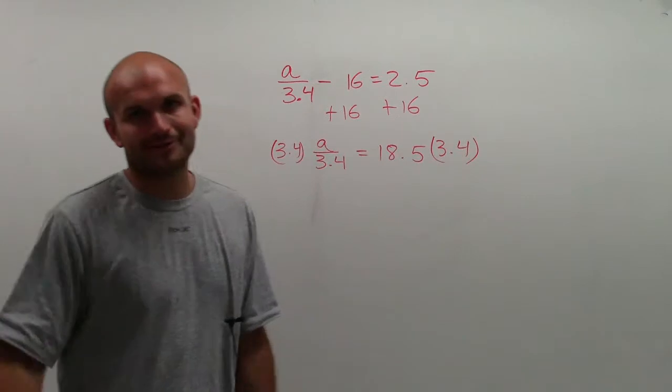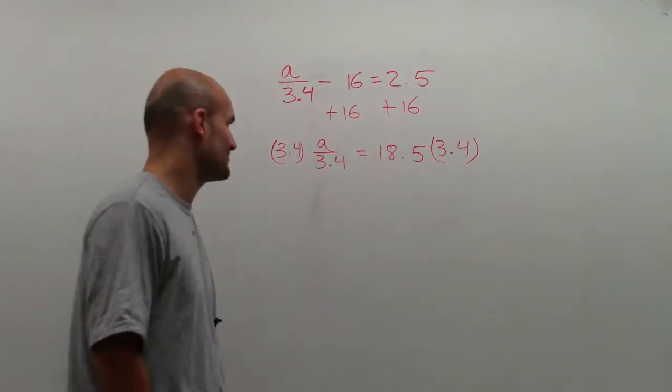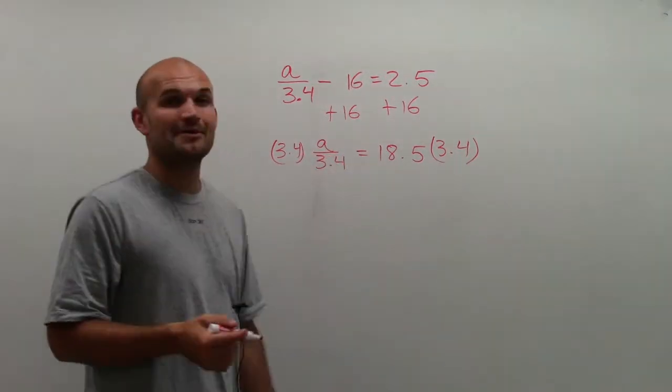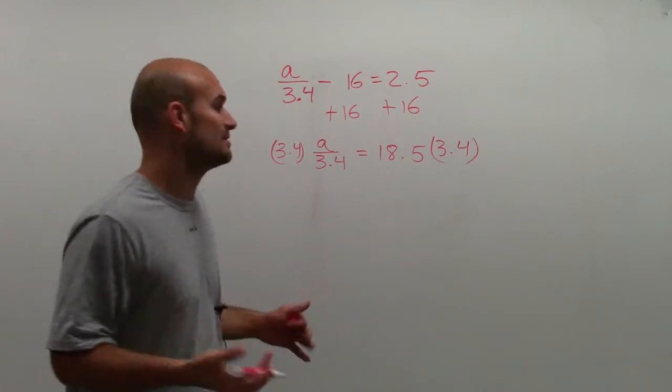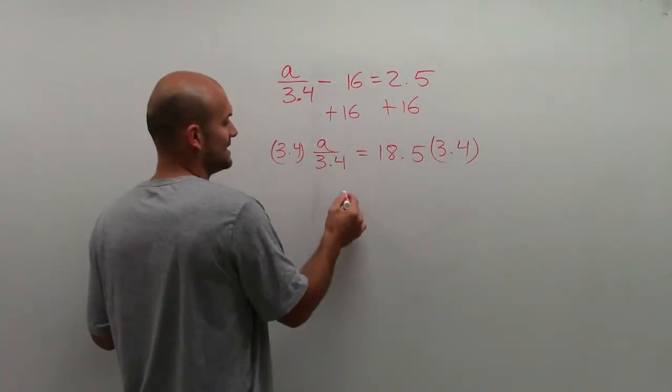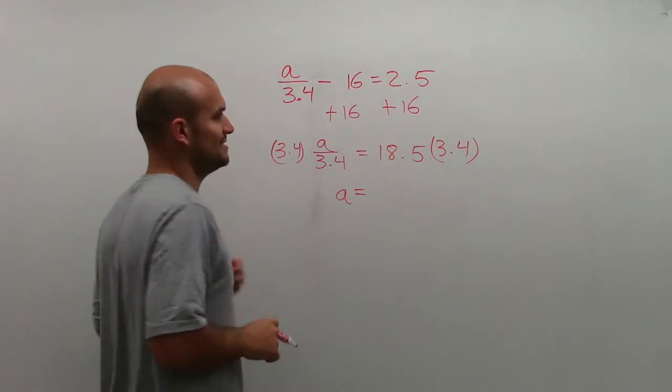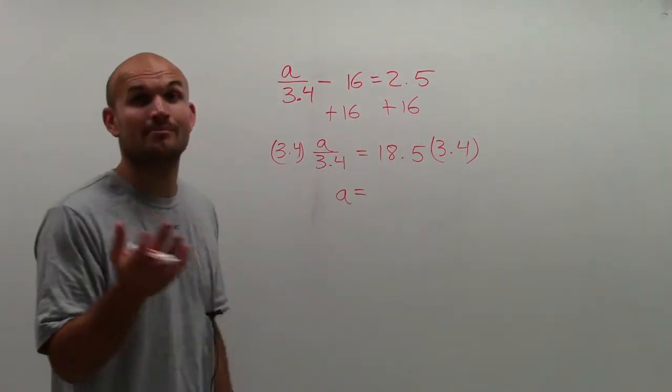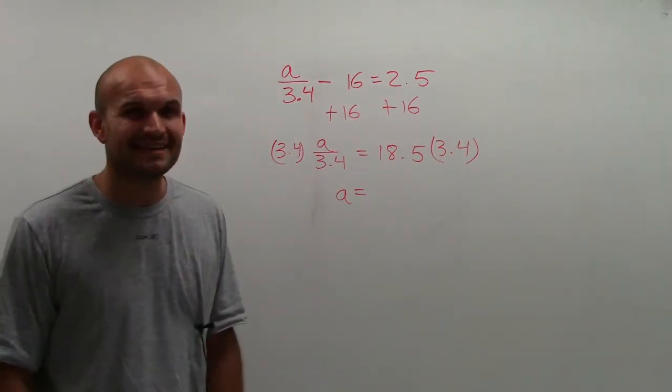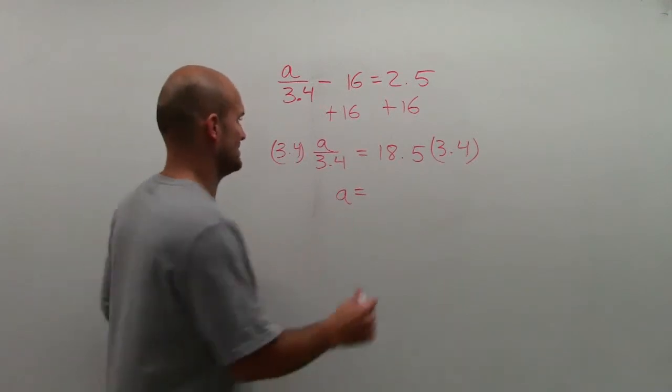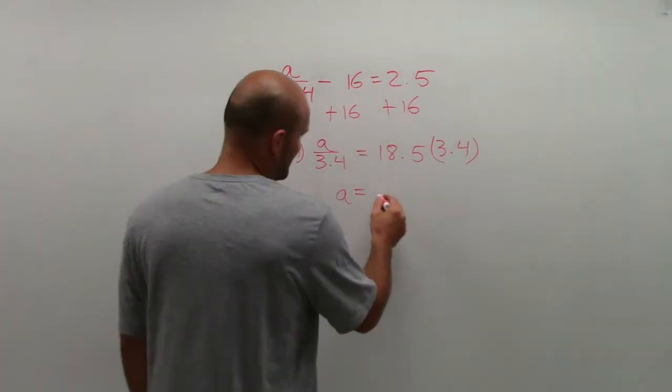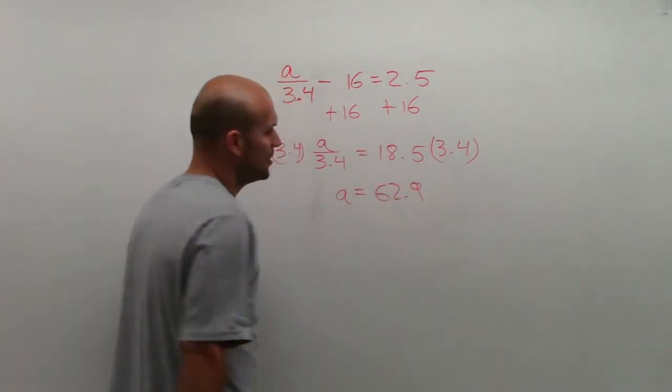Or you should know how to do multiplication on a pad of paper as well. 3.4 divided by 3.4, since it's the same number, it's going to divide into 1. 1 times a is just a. Then I have 18.5 times 3.4. It might even be helpful to know how to do it in your head, but it's not always necessary, because I just did it before, which is 62.9.